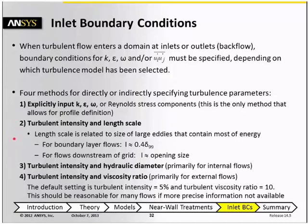All of these methods use the turbulent intensity, and then depending on what you know about the flow, you can choose one of the three available methods. One method is to prescribe the turbulent length scale, which is related to the size of the large eddies in the flow that contain most of the turbulent kinetic energy. If you have a boundary layer flow, this could be about 40% of the boundary layer thickness.